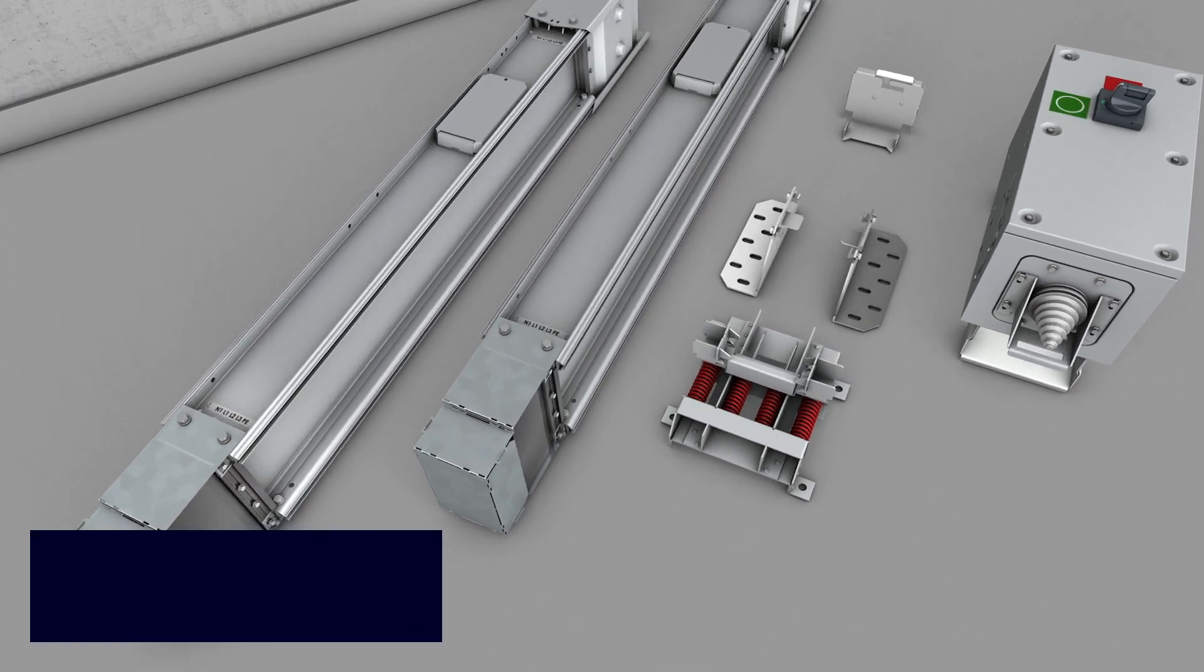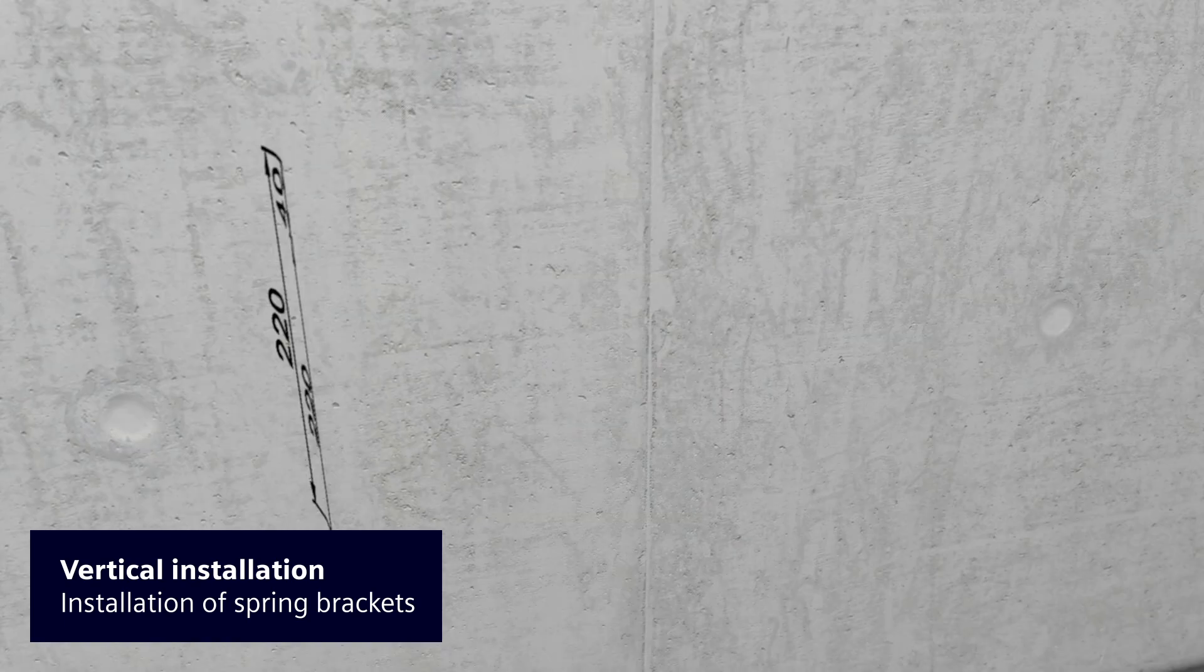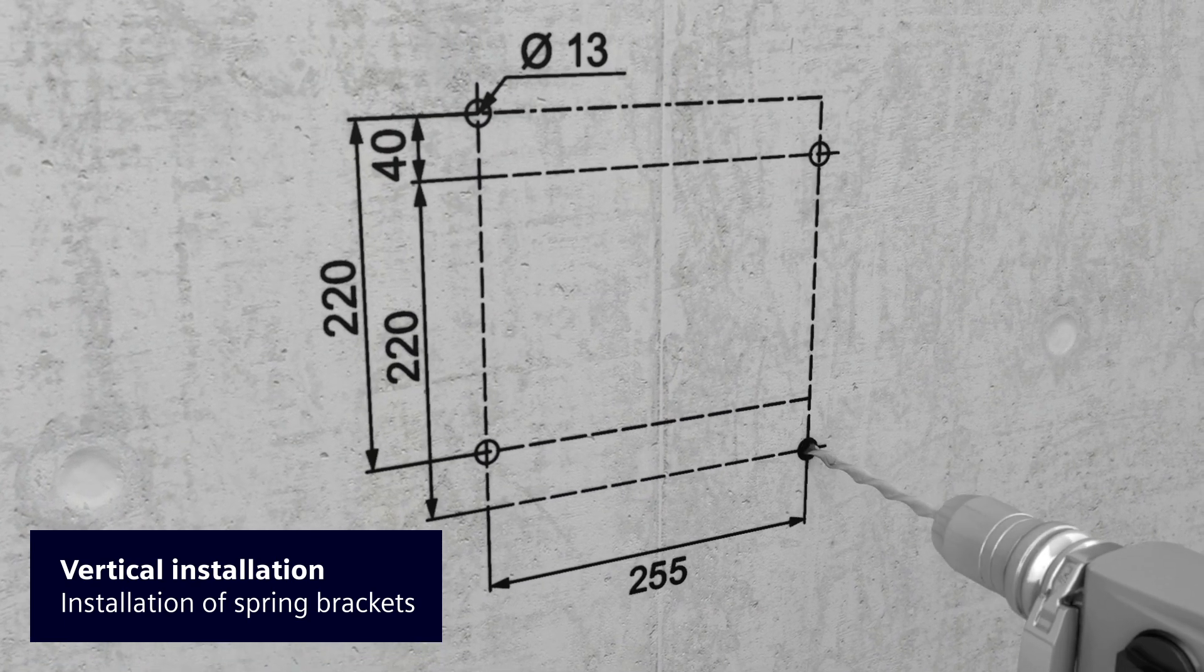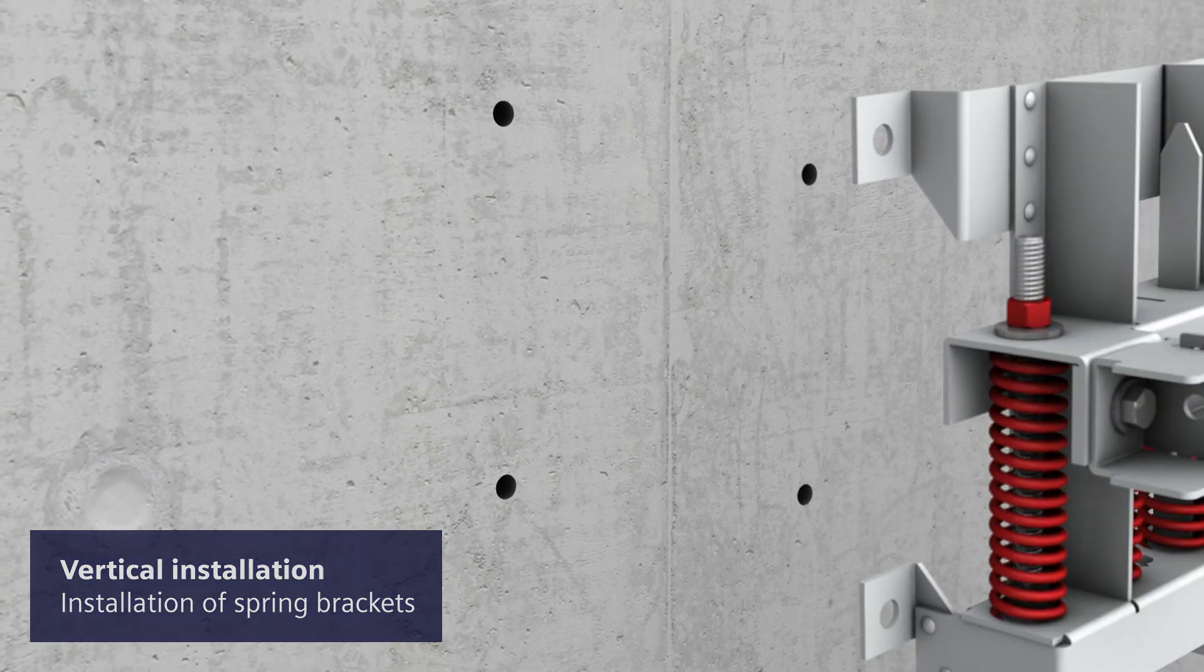In vertical installations, which are popularly used in large buildings, so-called spring brackets are commonly used. These spring brackets are the first components to be wall-mounted in LI system installations.